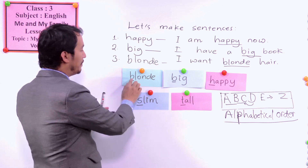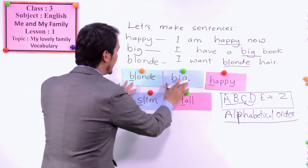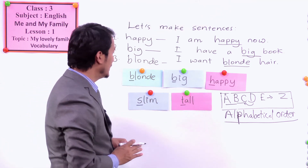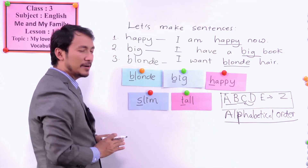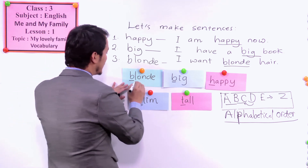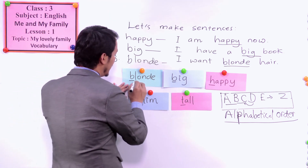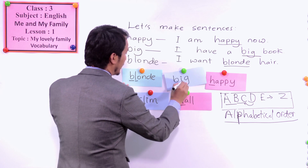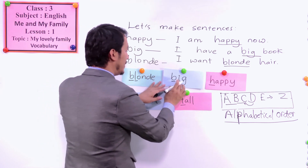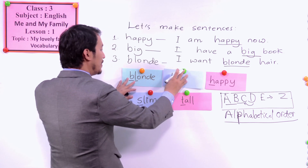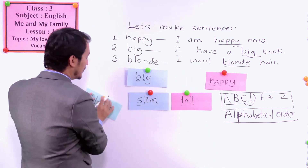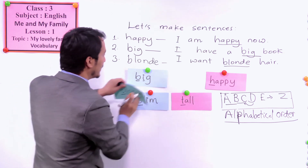Now we have B and B — how do we decide which comes first? Now we have to look at the second letter. Look here — we have L here and there we have I. So you have to put I before L, because I comes before L.